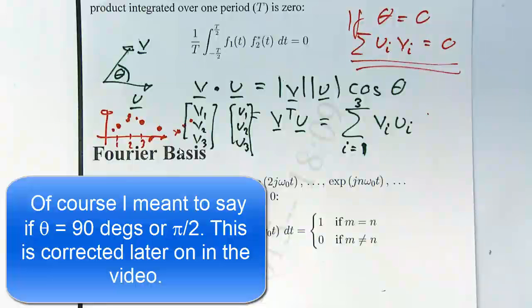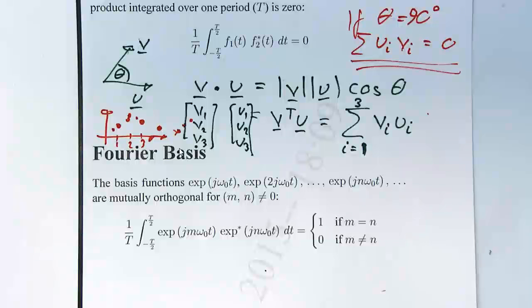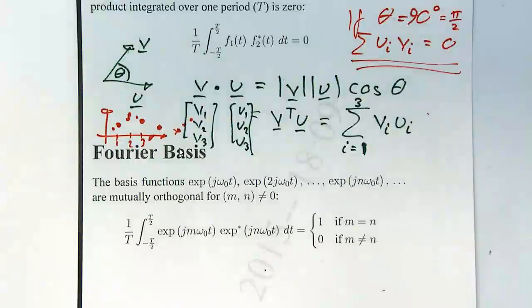Thank you very much. Put a 9 in front of it, yeah. So it should have been 90 degrees or π over 2. So that one I'll declare as an unforced error. I was just not really thinking about everything I've written, but the rest of it's correct.